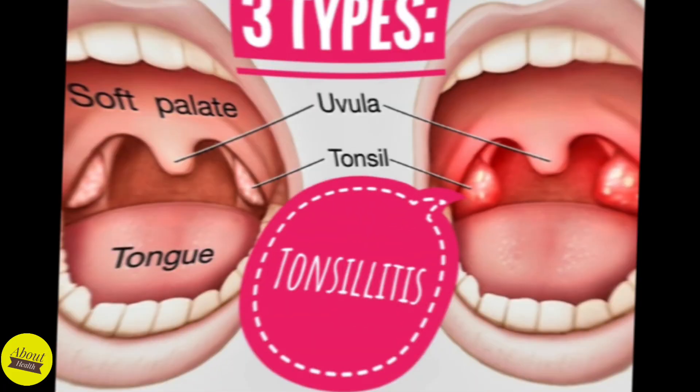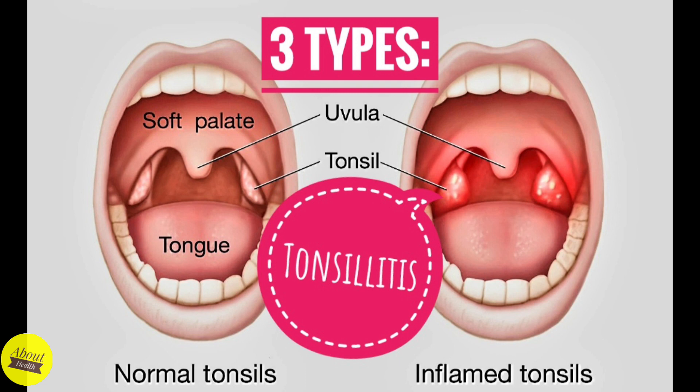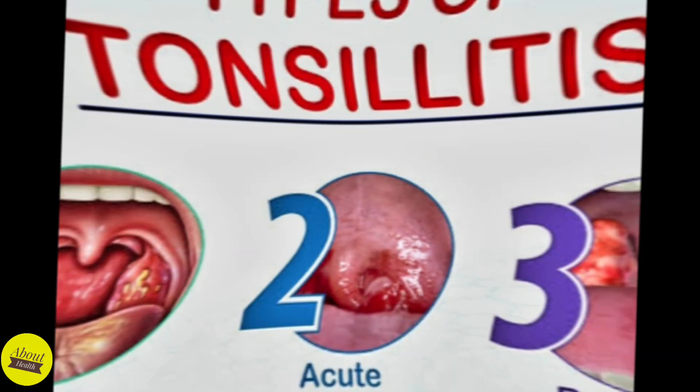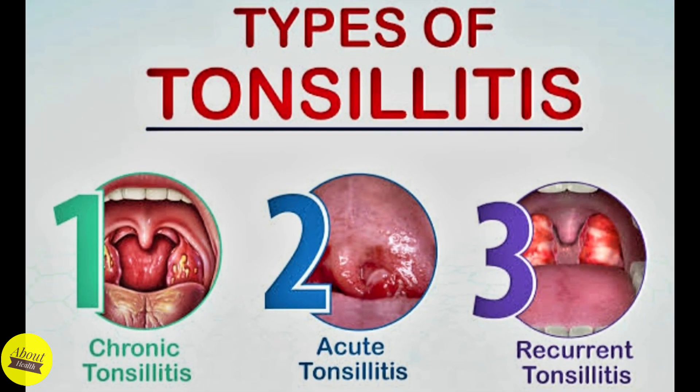The three types of tonsillitis are: Acute tonsillitis — symptoms usually last three or four days but can last up to two weeks. Recurrent tonsillitis — this is when you get tonsillitis several times in a year. Chronic tonsillitis — this is when you have a long-term tonsil infection.